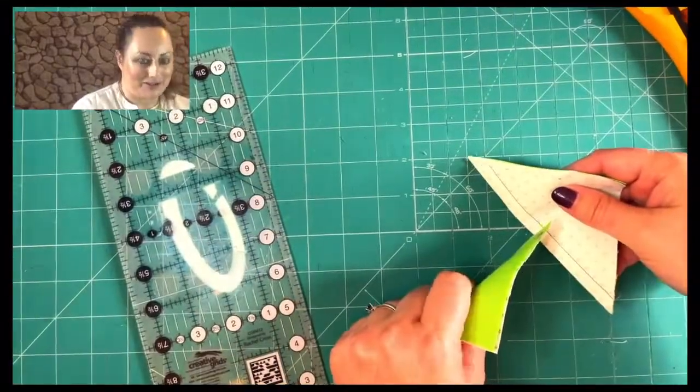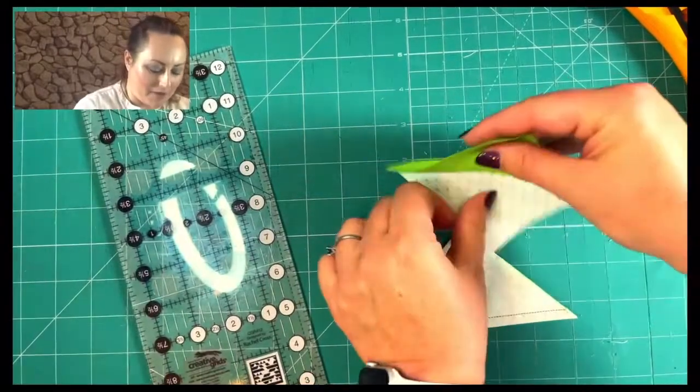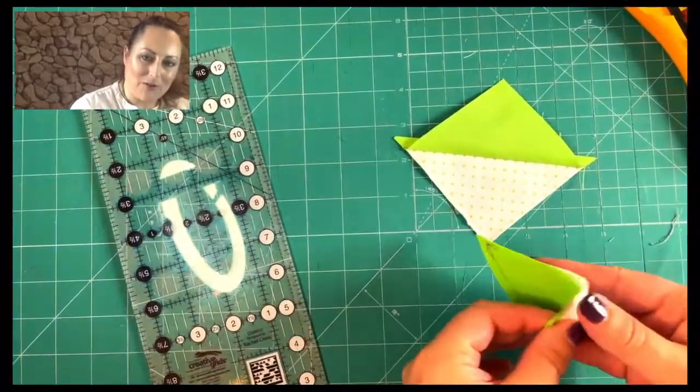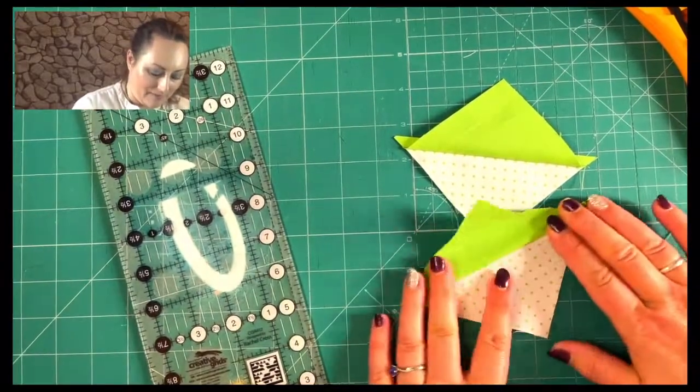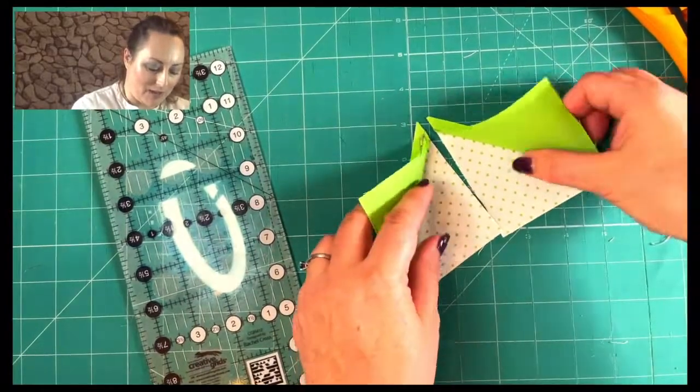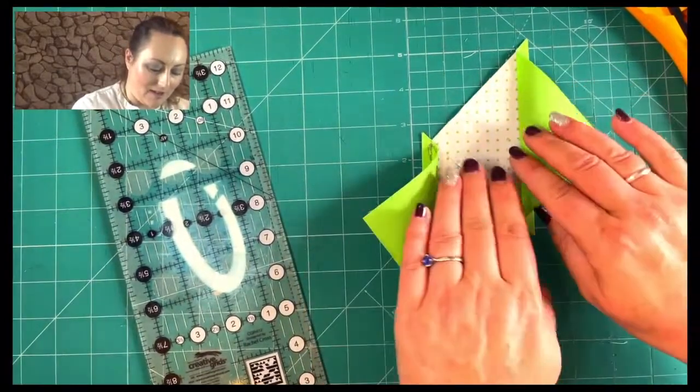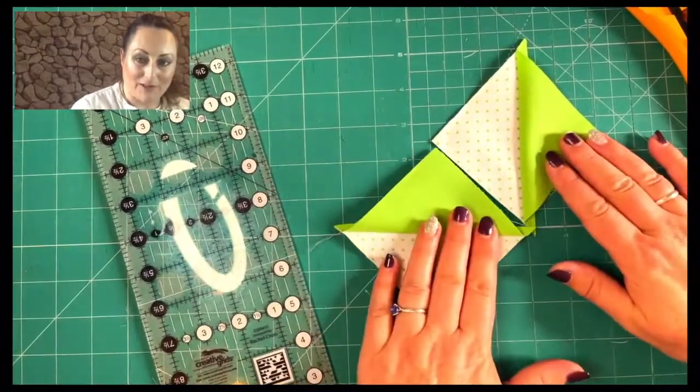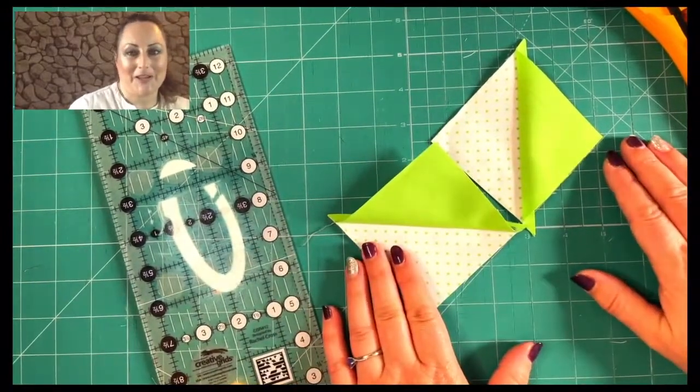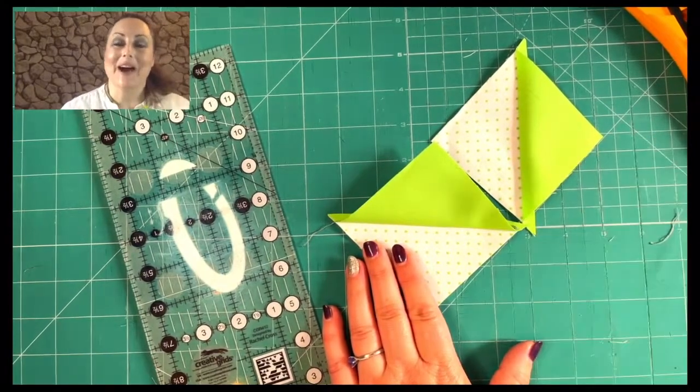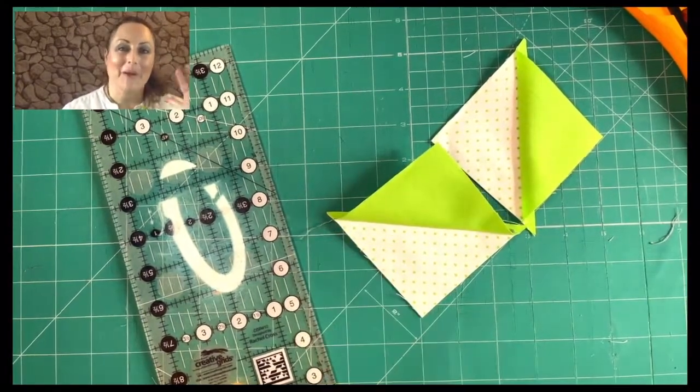You see you don't need to sew triangles together at all. And as I open those up and press those out, you will see that you have got two little blocks. So from two squares, we'll make your two blocks and you can put those in any patterns that you would like. Obviously, press them first before you start sewing them together. So that is how you make half square triangles. I hope that's been helpful and I'll see you all in the next video. Bye for now.